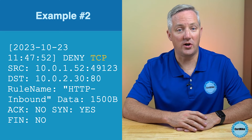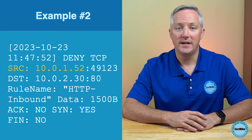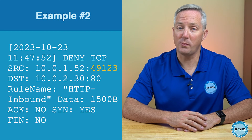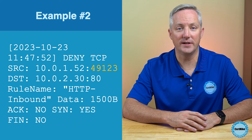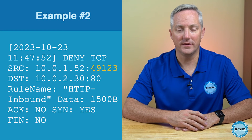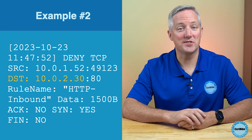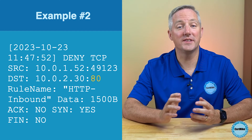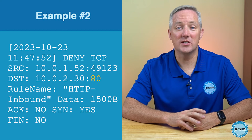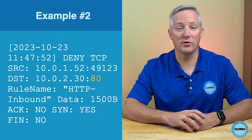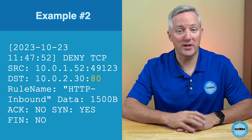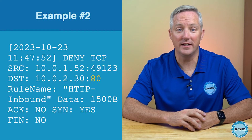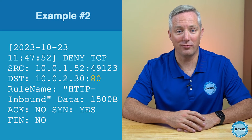This entry is also for a TCP packet, and the source IP address was 10.0.1.52, with a source port of 49123 — another ephemeral port. The destination IP address is the same as the previous example, 10.0.2.30, but the destination port is different. This one is on port 80, which is for unencrypted web traffic. It looks like our rules were set to only allow encrypted web traffic, so we're blocking connections on port 80 while allowing connections on port 443.